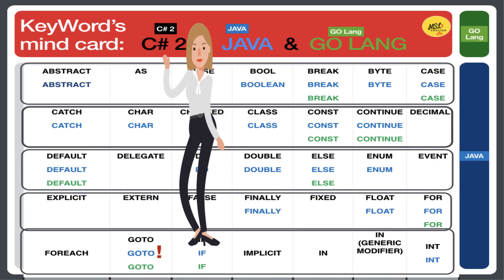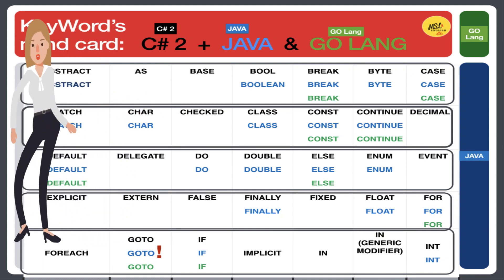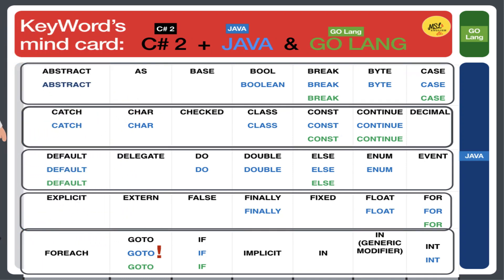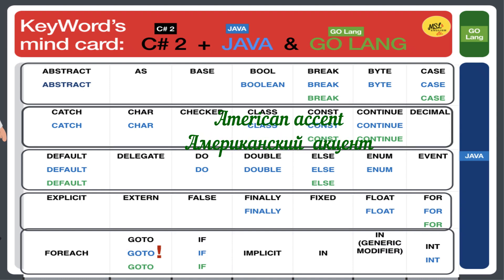Hi guys. Let's get started to compare and repeat three computer languages — first table from the letter A to the letter I — C#, Java, and Go language. Please listen to my American accent. I will speak slowly. Abstract. As. Base. Bool. Break. Byte. Case. Catch. Char. Checked. Class. Constant. Continue. Decimal. Default. Delegate. Do. Double. Else. Enum. Event. Explicit. Extern. False. Finally. Fixed. Float. For. For each. Goto. If. Implicit. In — generic modifier. Int.